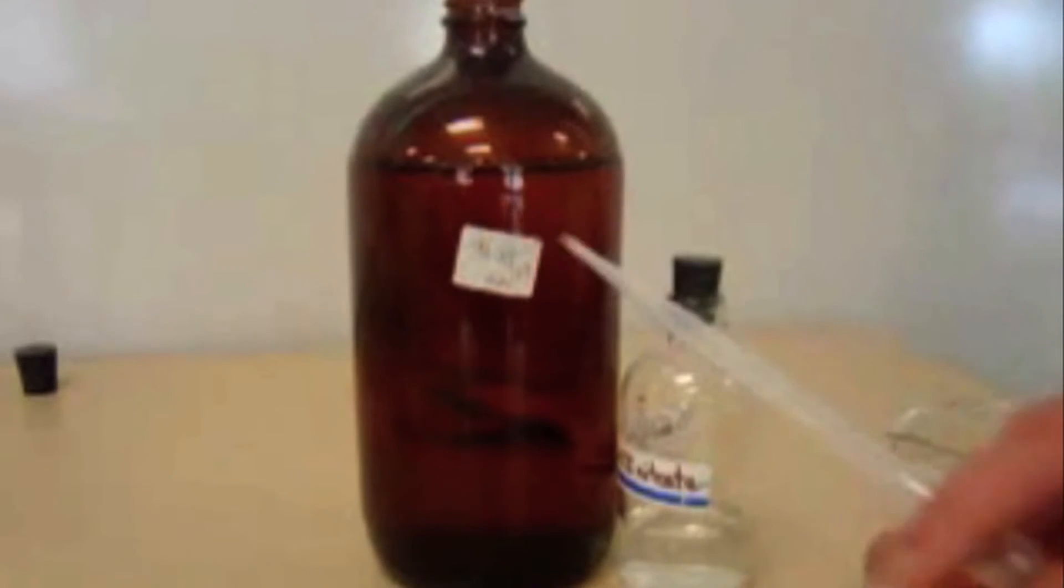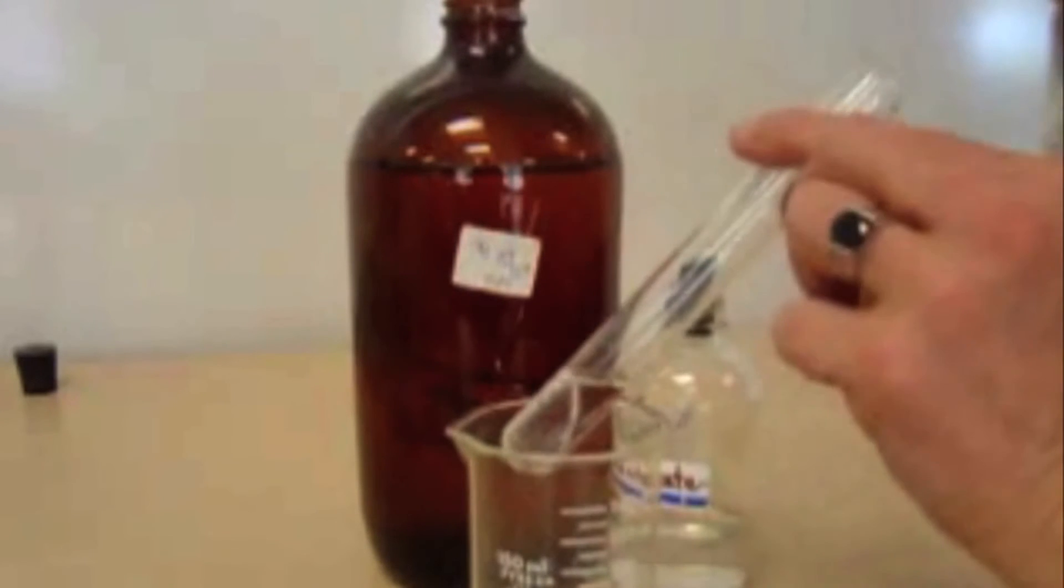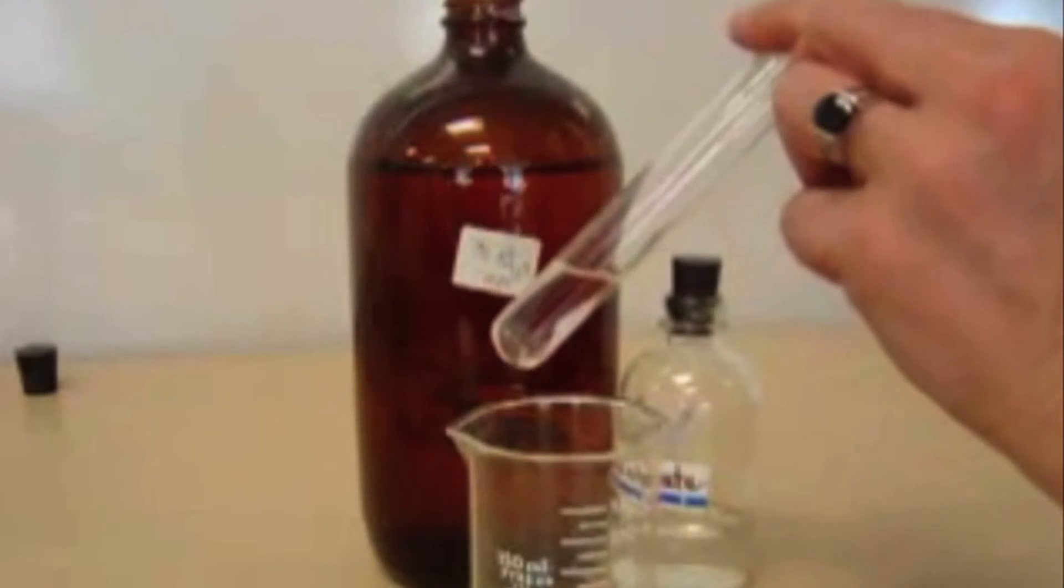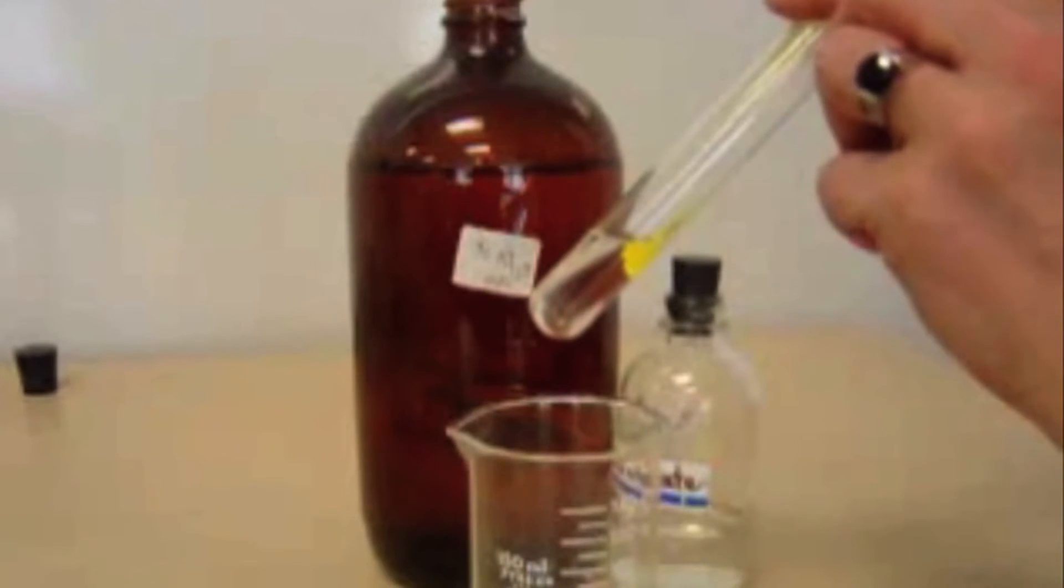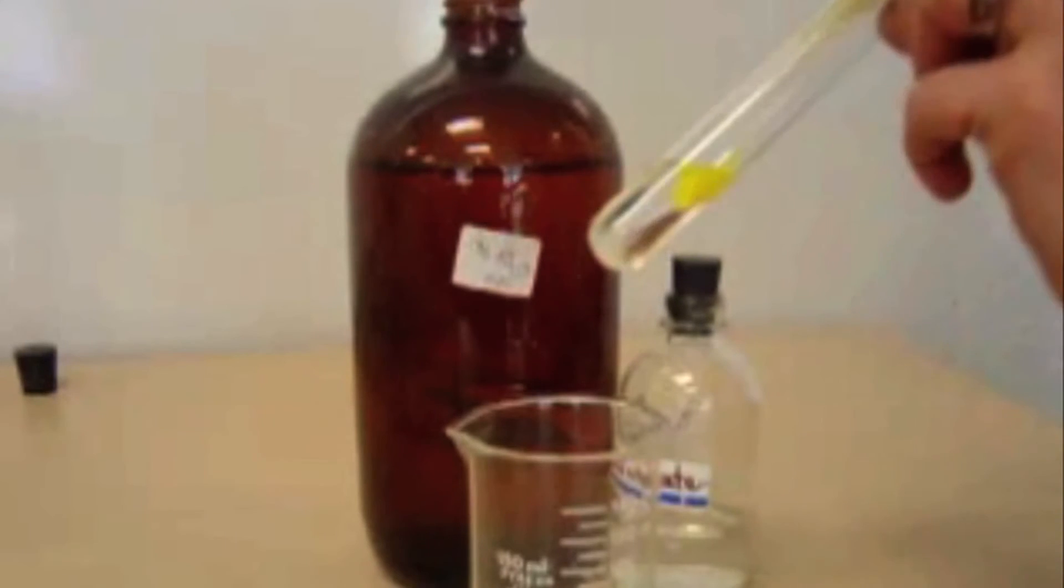We are going to mix potassium iodide and lead nitrate, lead 2 nitrate. So I've got my lead nitrate in here, and I'm going to add some potassium iodide to it.